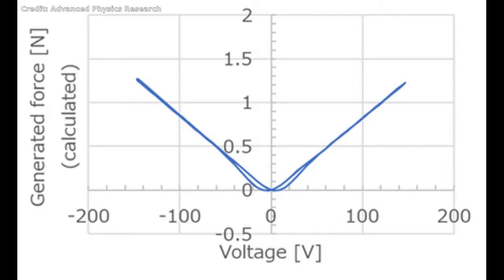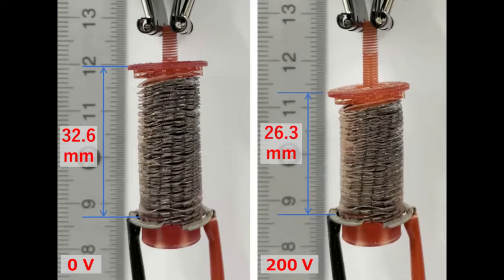Electrostatic actuators are devices that use electric fields to move objects. These devices consist of two oppositely charged electrodes that generate a force whenever an electric field develops between them.